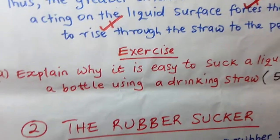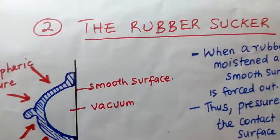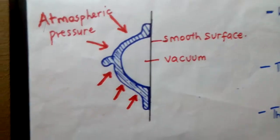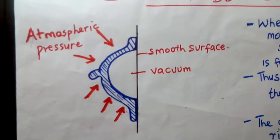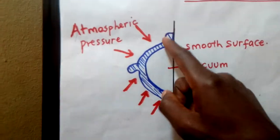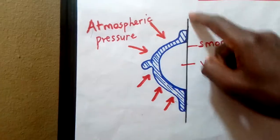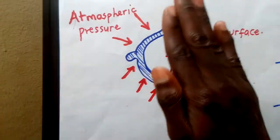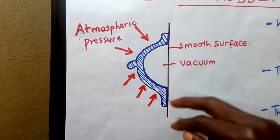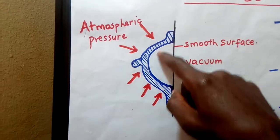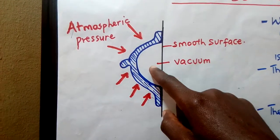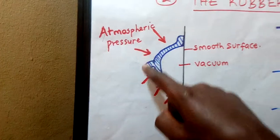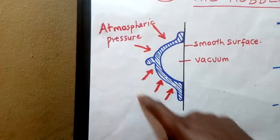The second application of atmospheric pressure is the rubber sucker, which has many uses. When using a rubber sucker, it is better to make it moist by adding a little water. You then press the rubber sucker firmly against a smooth surface. The air inside is forced out, creating a vacuum inside. Atmospheric pressure acts on a body in all directions, so outside there is atmospheric pressure while inside there is now very low pressure.